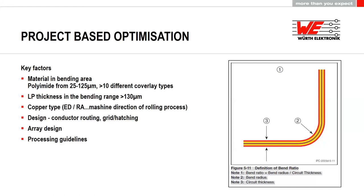The rolling direction is important and has a high influence on PCB panelization. We look at our panel to place the PCB in the right direction, and it's very important to know which direction is used for dynamic bending when there are two or more flex sections. In the design we can look at conductor routing, grid, or hatching in the flex area. We have process guidelines which we can discuss with you, and project-specific solutions can only be optimized where requirements are specified.